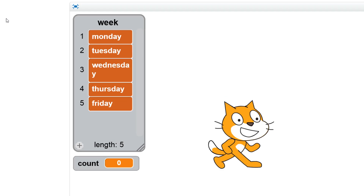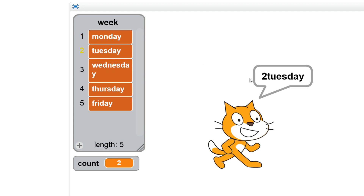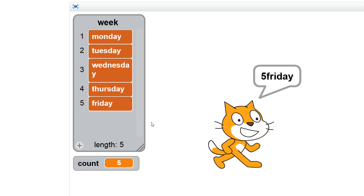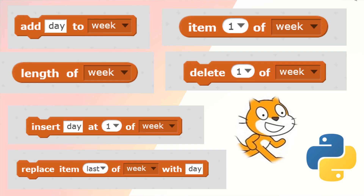To make it clearer, we're going to join the count (which is one, two, three, four, five) plus the item in the list. So number one item is Monday, number two item is Tuesday, number three item is Wednesday, number four item is Thursday, and number five item is Friday. So in Scratch we can do a few things with a list: we can access different items, add items, delete them, insert them, and replace them. Now let's have a look at Python.